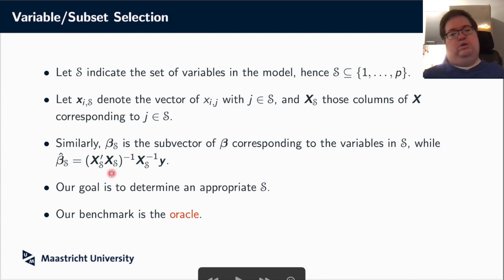And we can define the least squares estimator of that sub-vector in terms of these X subscript S matrices, which only include those columns corresponding to the variables we choose. So the goal of variable selection is simply to determine an appropriate S. Well, what is an appropriate S? For that we need a benchmark, and our benchmark is what we call the oracle.